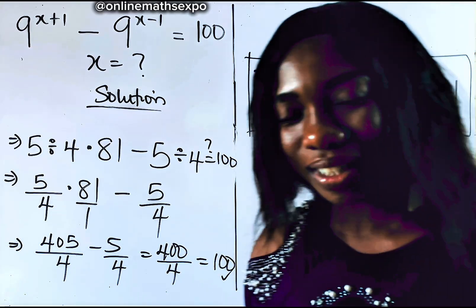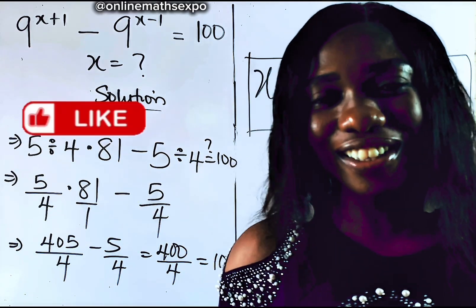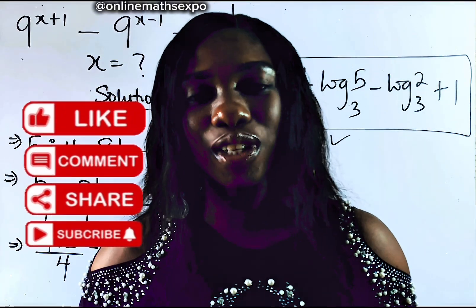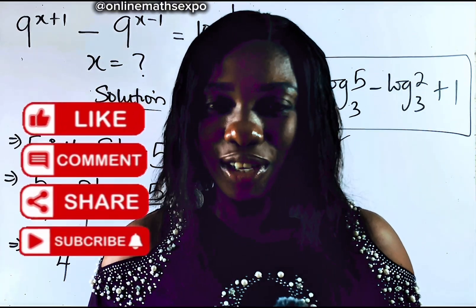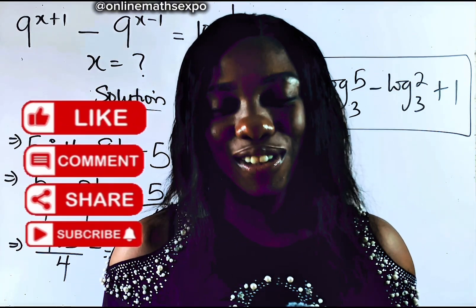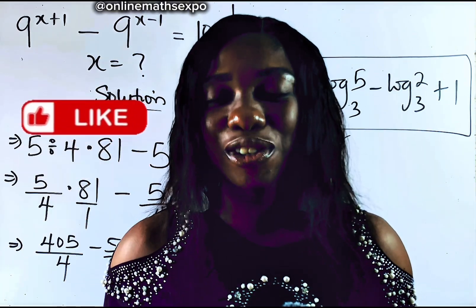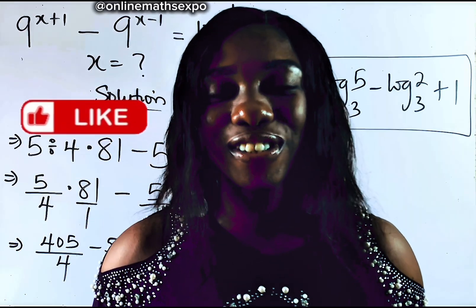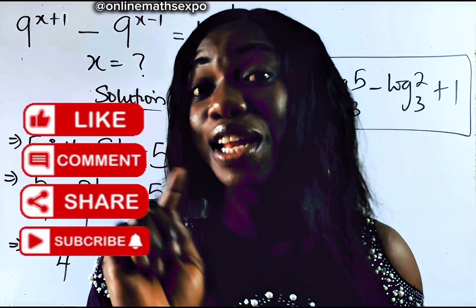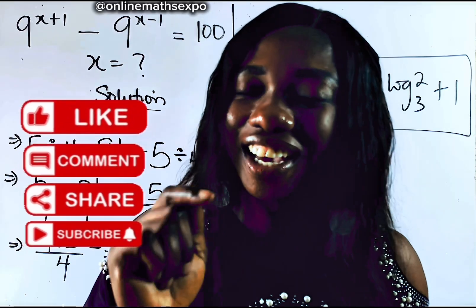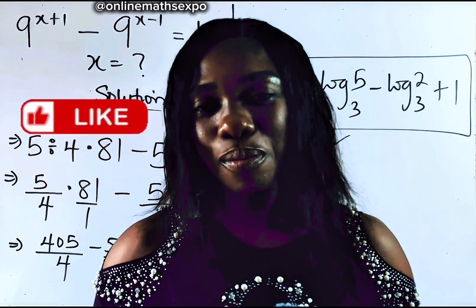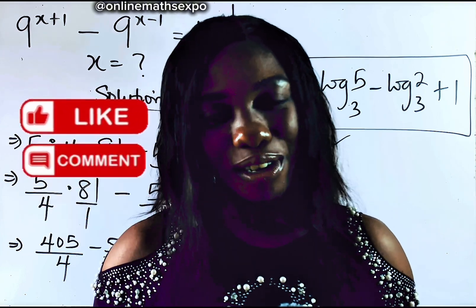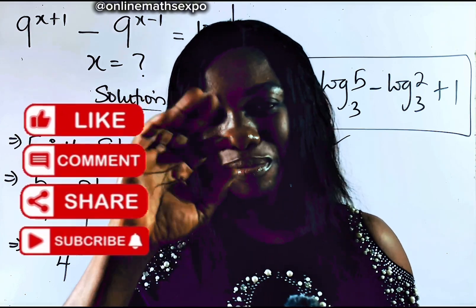In conclusion, x is equal to one-half log 5 base 3, minus log 2 base 3, plus 1 — absolutely correct as you can see. I hope you learned something today. Don't forget to like and share this video. Thank you for always choosing to learn through us — see you in my next class. Bye.